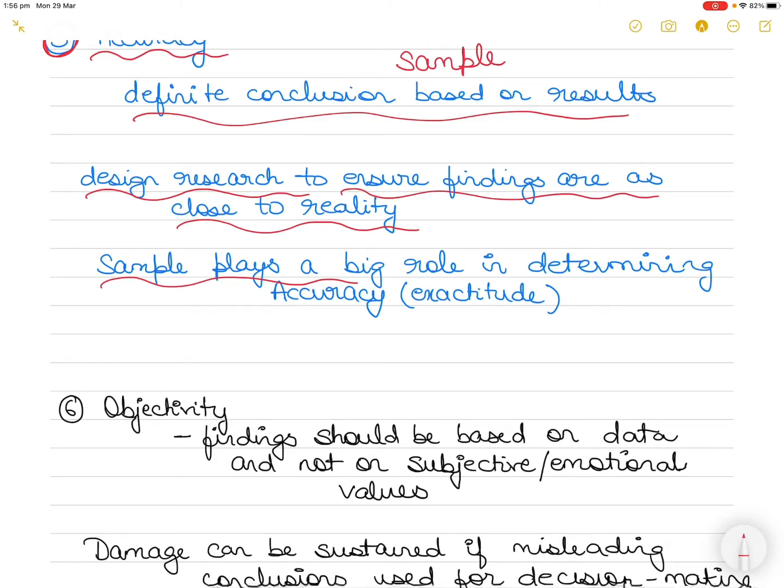Accuracy reflects the degree of exactitude of results based on the sample. For example, if I estimated the number of production days lost during the year through absenteeism between 30 to 40, while the actual number of days lost happens to be 35, the accuracy of my estimate compares more favorably.